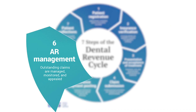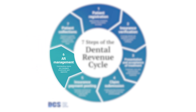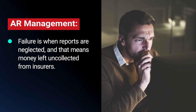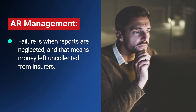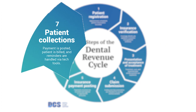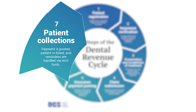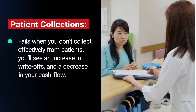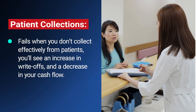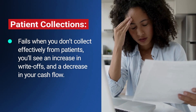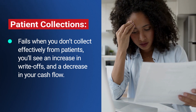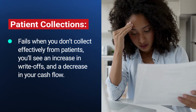Number 6 is AR management. Vigilant management of aging reports helps in chasing down unpaid claims and securing the payment you're due. The failure in this step is when reports are neglected, and that means money left uncollected from insurers. Number 7 is patient collections. Effective collection strategies are crucial for maintaining cash flow by ensuring patients fulfill their financial commitments. The final step fails when you don't collect efficiently from patients — you'll see an increase in write-offs and a decrease in cash flow, meaning your team has to spend more time following up with patients about outstanding balances.